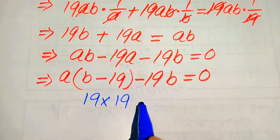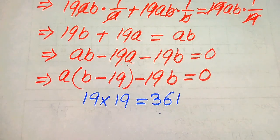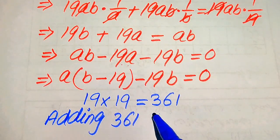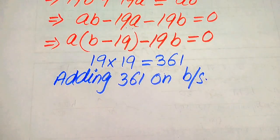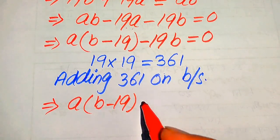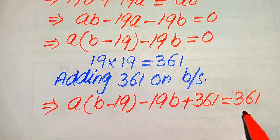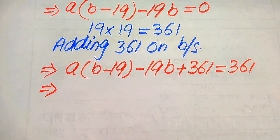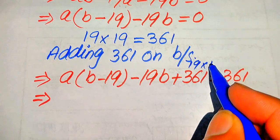In the next step, we need an extra term to easily make the factor (b minus 19). We note that 19 times 19 equals 361. So we add 361 to both sides of the equation, giving us a(b minus 19) minus 19b plus 361 equals 361.